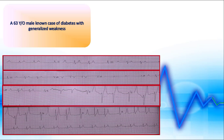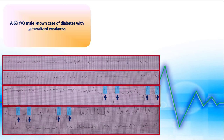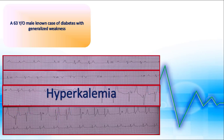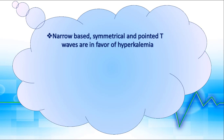The last example in this part is an EKG from a 63-year-old male, a known case of diabetes presenting with generalized weakness. There are symmetrical, narrow-based, and tented T waves in precordial leads — therefore hyperkalemia is highly probable in this patient. Serum potassium was 7.6.